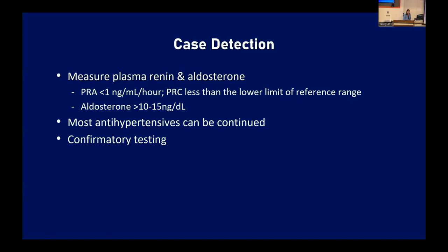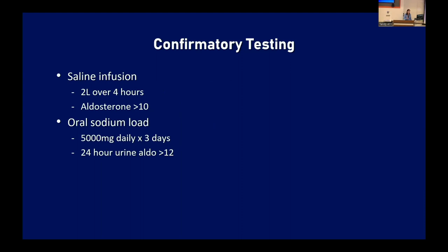Most antihypertensives can be continued during testing. Regarding spironolactone: if the renin is still suppressed on it, you haven't fully blocked the mineralocorticoid receptor and can still get an accurate ratio. If the renin is elevated on spironolactone, withdraw the agent and retest. Once you have a positive case detection, move on to confirmatory testing. The most commonly used confirmatory test is a saline infusion — give about two liters of normal saline over four hours. If aldosterone remains greater than 10, that confirms the diagnosis.